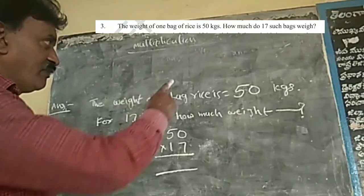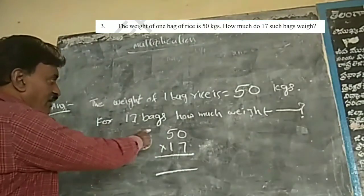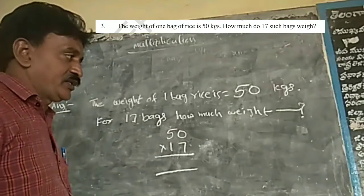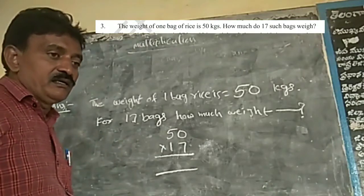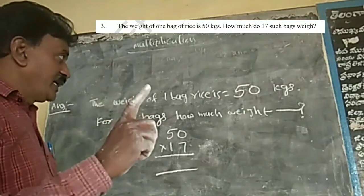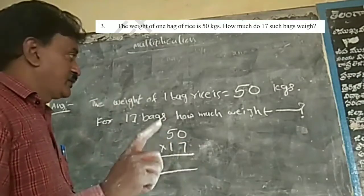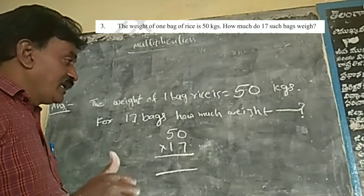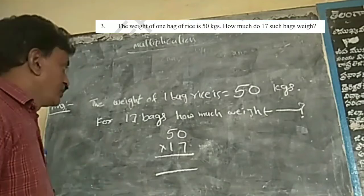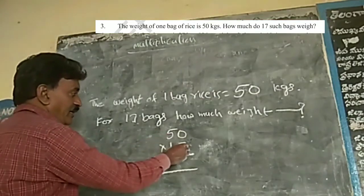So for 17 bags, how many kgs? You can understand. One bag weight is 50 kgs rice. For 17 bags, how many kgs? So 50 into 17. Write like this.